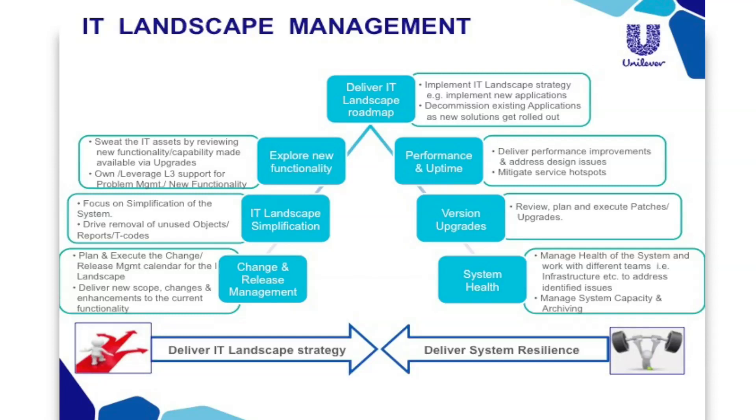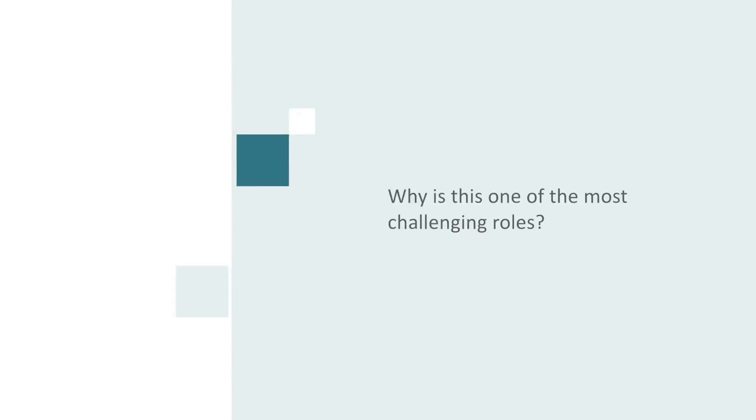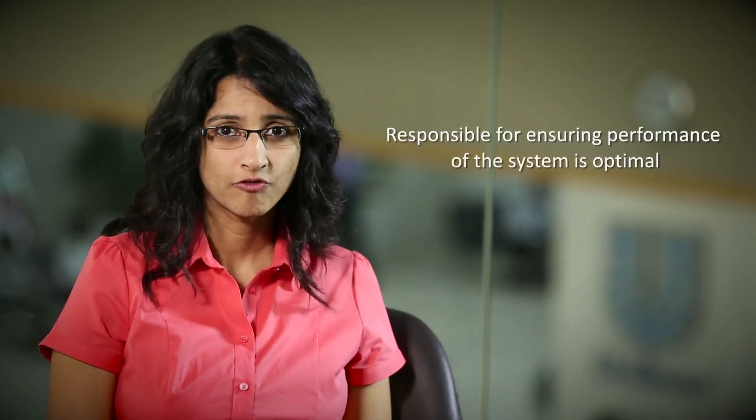The change and release schedules are adhered to, meeting project requirements for any technical IT landscape planning, and finally keeping the landscape secure. As an IT landscape manager, you're responsible for ensuring the performance of the system is optimal and within the agreed SLAs. You will set the expectation on the performance standard, do the analysis when performance is not as expected, and drive actions with the respective teams.